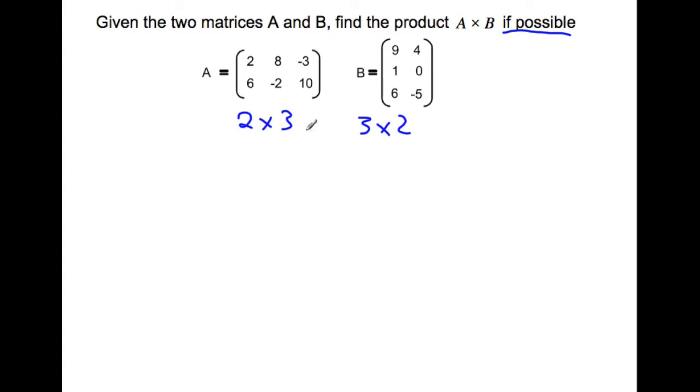Now we check if these inner dimensions match up. Does three match with three? Yes, it does. So this is possible. Now we multiply A times B. First, let's see what the dimension of our answer will be. We match up the outer dimensions. The answer is going to be a 2 by 2.